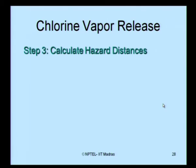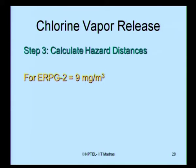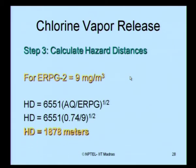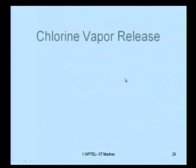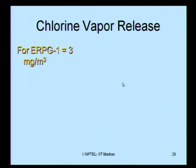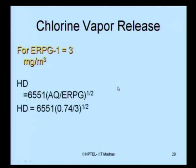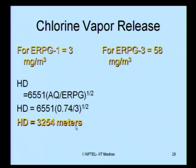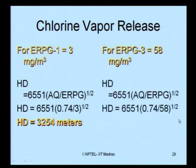Based on the CEI value, we compute hazard distances for different ERPG levels. For ERPG 2, the hazard distance is 1.878 km. For ERPG 1 at 3 mg/m³, the hazard distance is 3254 m. For ERPG 3 at 58 mg/m³, the hazard distance is 740 m. We have now solved two examples — one for a liquid release and one for a vapour release.